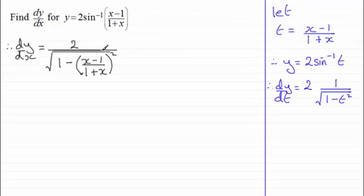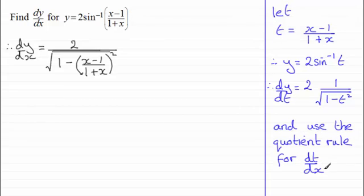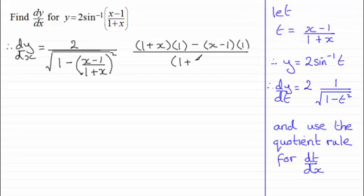Now I've got to multiply all of this then with dt dx. So to differentiate this then for dt dx I'm going to need to use the quotient rule. So using the quotient rule then we've got the bottom of the fraction 1 plus x which is then multiplied by the differential of the top which is just going to be 1. And then it's minus the top of the fraction x minus 1 multiplied by the differential of the bottom of the fraction which is going to be 1. And all of that is divided by the bottom of the fraction all squared. So that's 1 plus x then all squared.